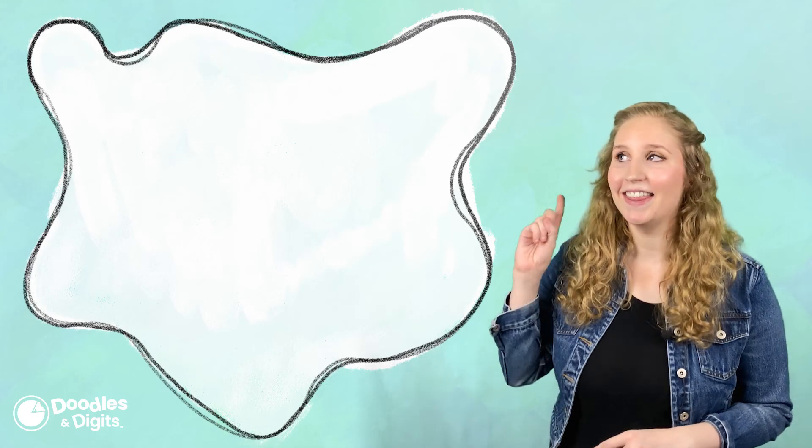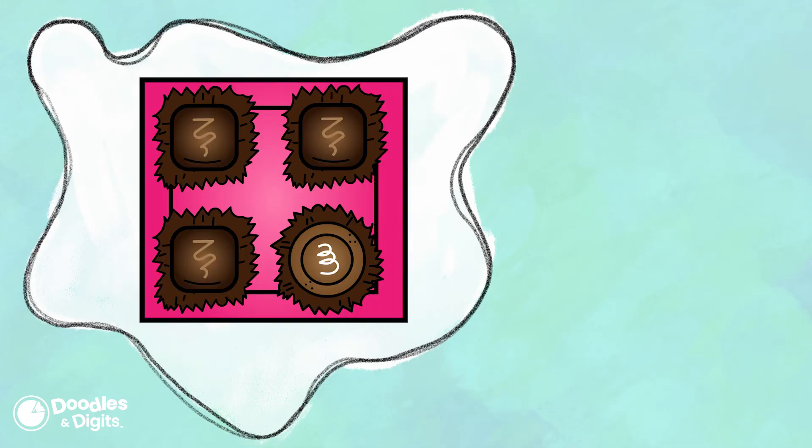Let's try this one. So there's four chocolates total in this chocolate box. So, our denominator is going to be four. Now, we're going to say that there's three square chocolates. So, our fraction is going to be three fourths.